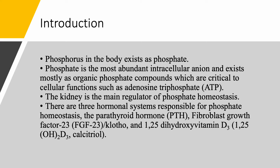The three hormonal systems regulating phosphate homeostasis are: number one, parathyroid hormone — like with calcium; number two, fibroblast growth factor 23, FGF-23; and then 1,25-dihydroxyvitamin D3, or calcitriol. When we talked about calcium, the three systems were PTH, calcitriol, and serum calcium itself. Here the only difference is serum calcium is not involved with phosphate homeostasis — instead we have fibroblast growth factor 23 with Klotho. We'll talk about that more later, but keep these three systems in mind.